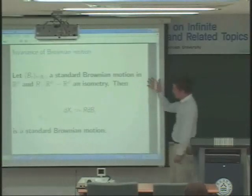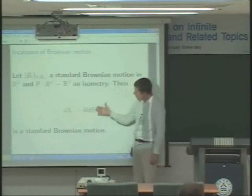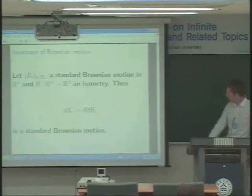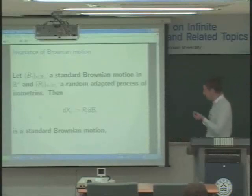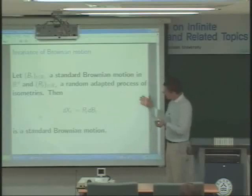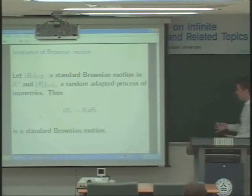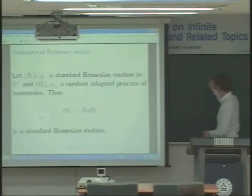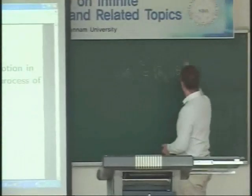And more interesting, we also have a similar property for Brownian motion. So if we rotate the Brownian differential, we get a process which is still Brownian motion. In this case, r is just a deterministic transformation, but it can be time-dependent. It can even be an adapted process of isometries, and x defined this way remains a Brownian motion. This is the famous characterization of Brownian motion by Lévy: a continuous martingale with quadratic variation equal to dt, where r is an isometry.